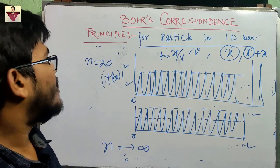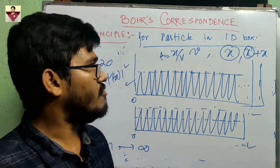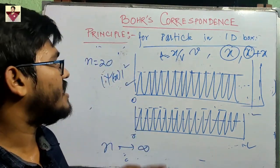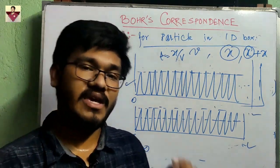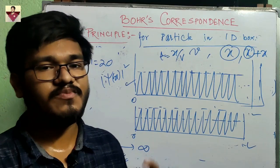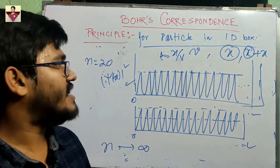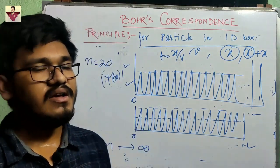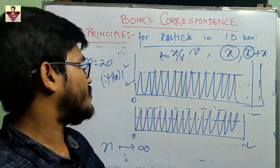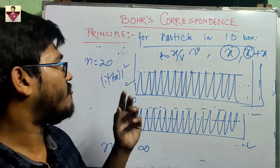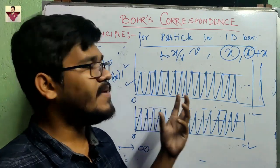So for n → ∞, quantum mechanical results agree well with classical mechanical results. If someone asks you whether Bohr's correspondence principle is violated for a particle in a 1D box, you simply say no — it is still preserved. You need to think from the right angle: if you take ΔE alone from the formula, it diverges for n → ∞; but if you take ΔE/E, it goes to zero, meaning the change in energy relative to the initial energy becomes zero. That leads to the energy continuum where quantum and classical mechanics converge.